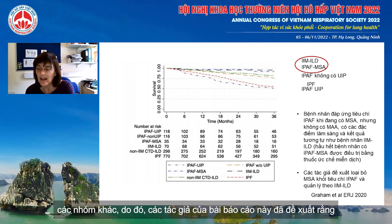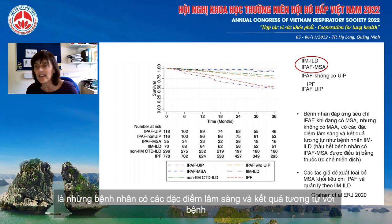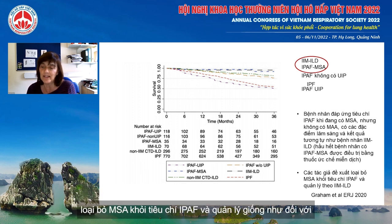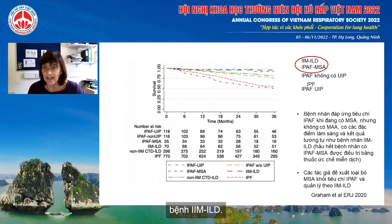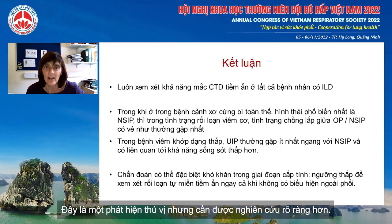The authors of this paper suggested that patients meeting IPAF criteria with myositis-specific antibodies, but not the associated ones, had similar clinical features and outcomes to idiopathic inflammatory myositis if treated with immunosuppressants, and they suggest removing the myositis-specific antibodies from the IPAF criteria and managing as per idiopathic inflammatory myositis. Clearly, this requires further study, but it is an interesting finding.